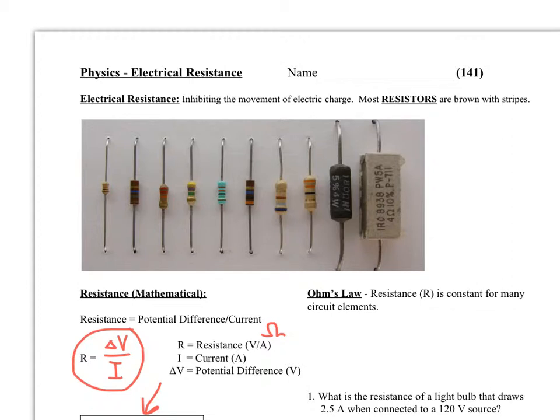But we're not going to factor any of that in. We're going to assume that all our elements, even light bulbs, stay fixed. They follow Ohm's law. So once we know the resistance of a given element, whether it's 30 ohms or whatever it is, it's going to stay at 30 ohms.